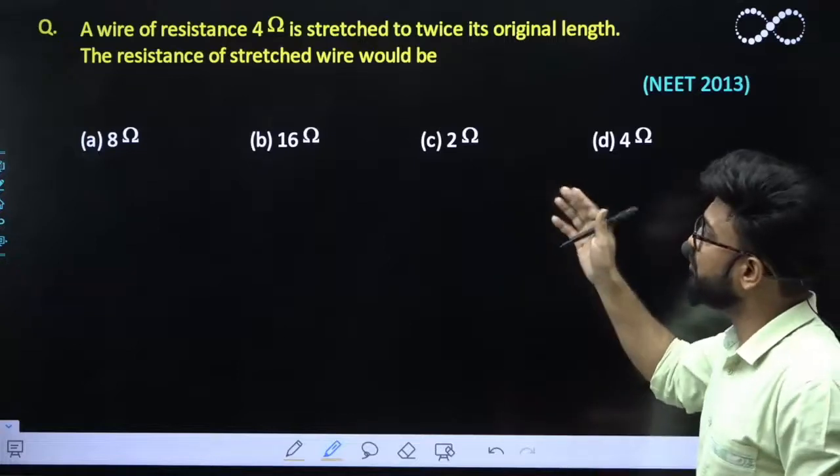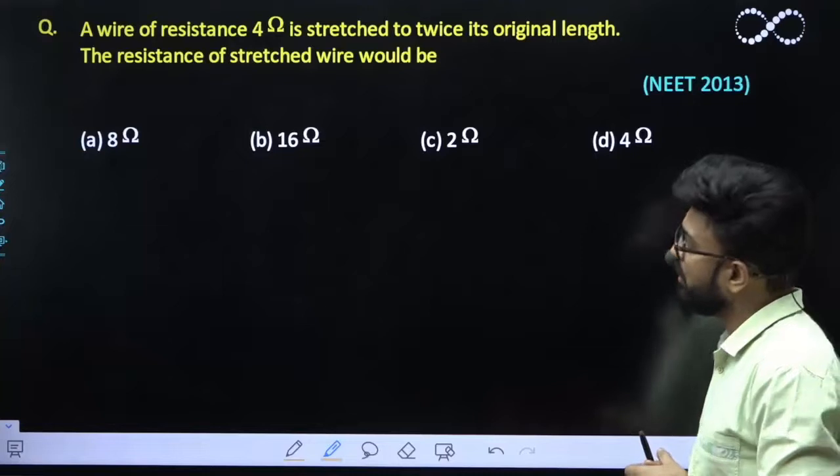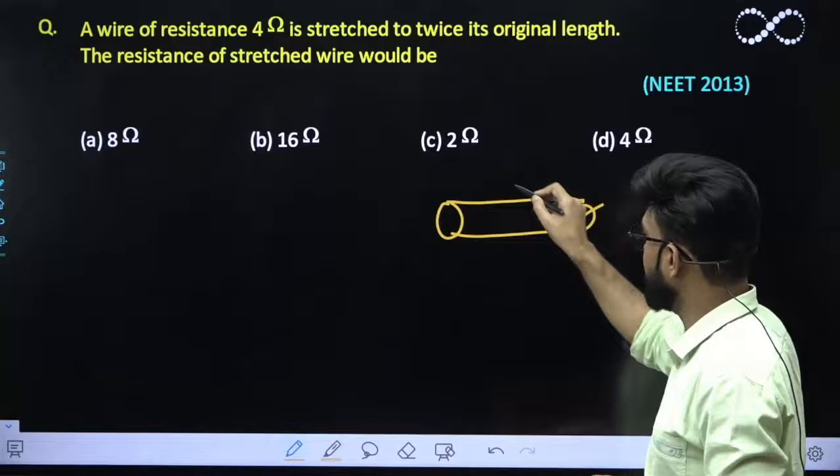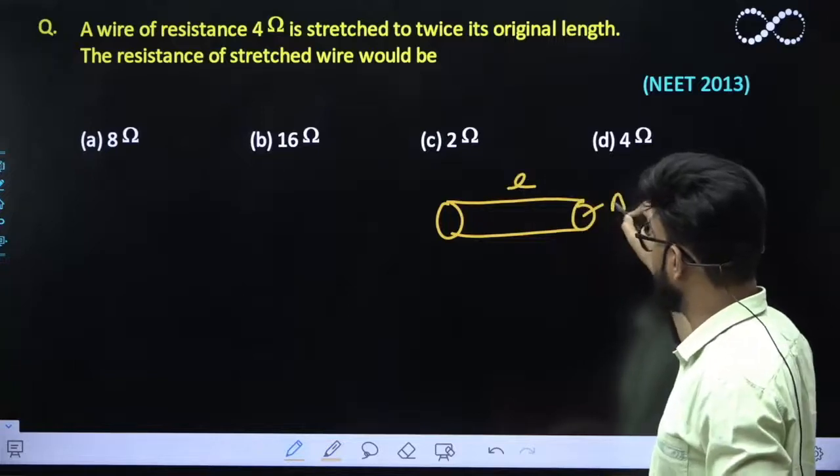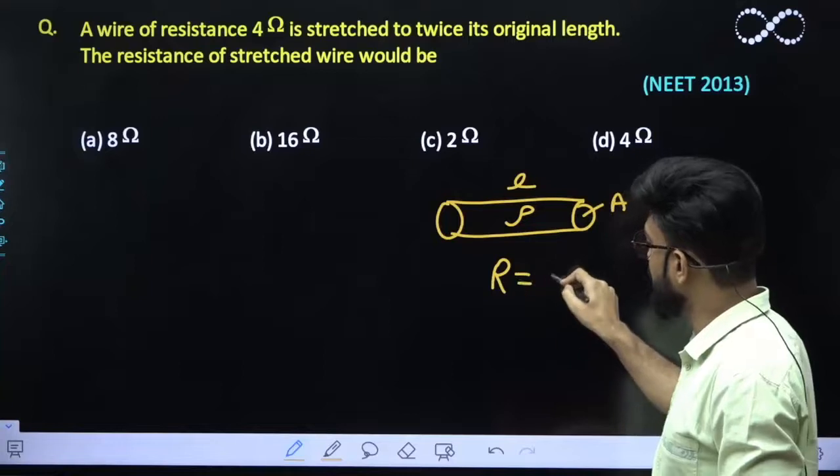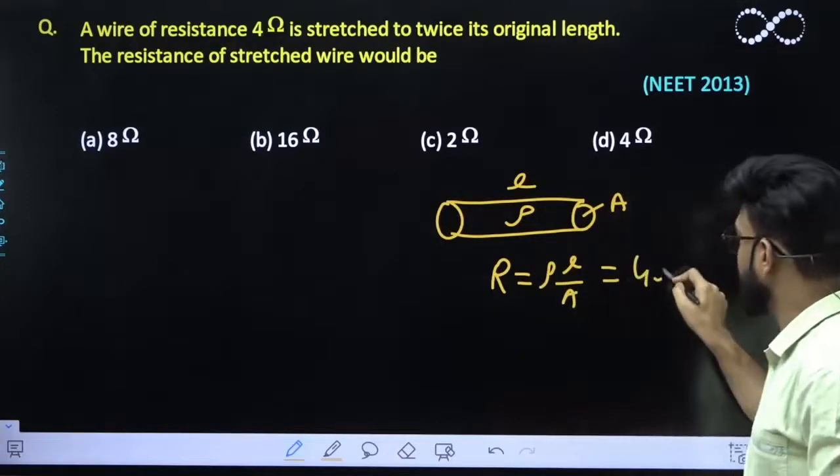The question states: A wire of 4 ohm resistance is stretched to twice its original length. Let's say the wire has length L, area of cross-section A, and resistivity ρ. The resistance is R = ρL/A = 4 ohm.